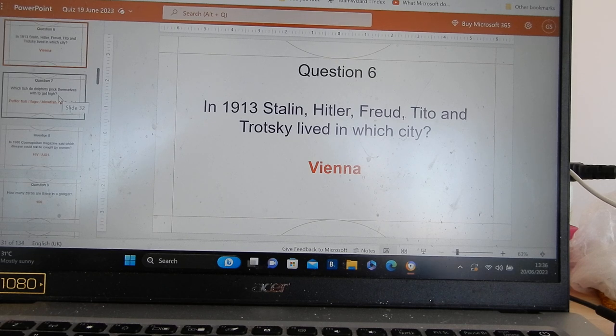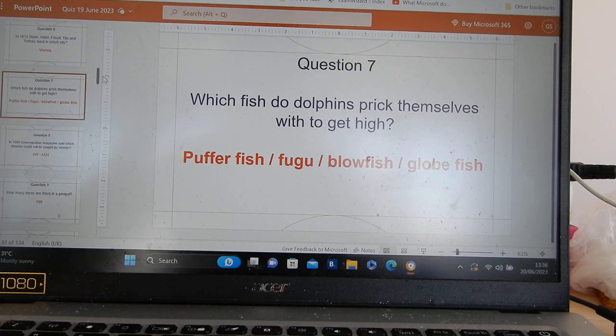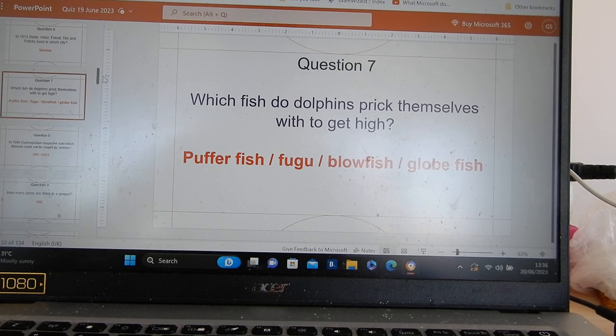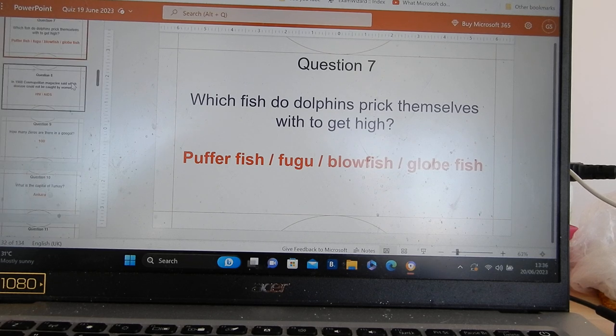Vienna! Yes, Freud was their big tip there. Pufferfish. Also called fugu, blowfish and globe fish. But yeah, pufferfish is the answer you mostly get.